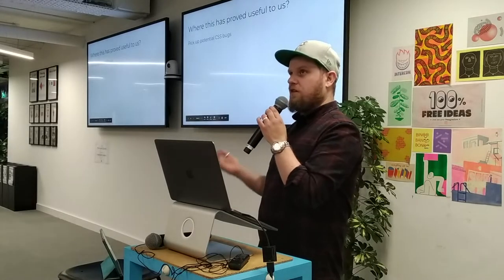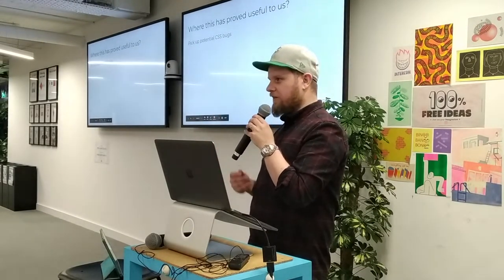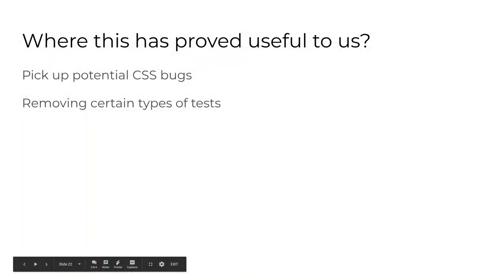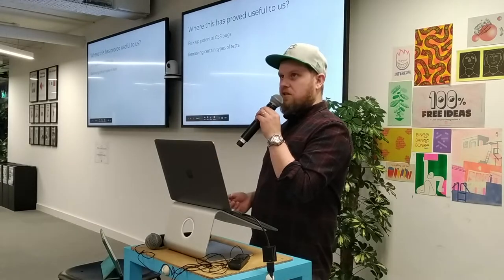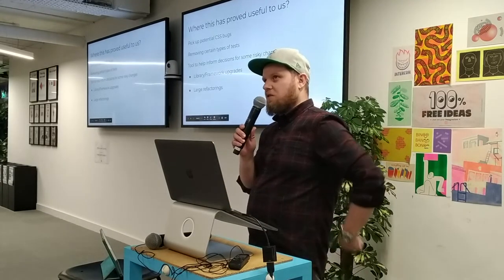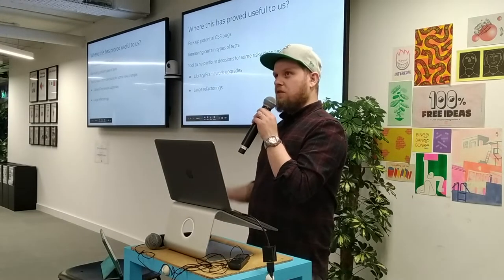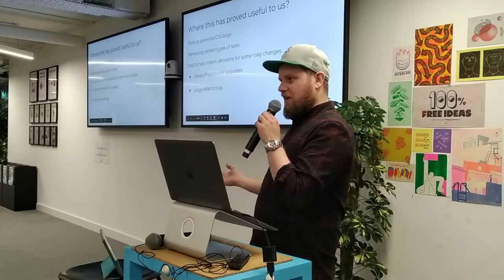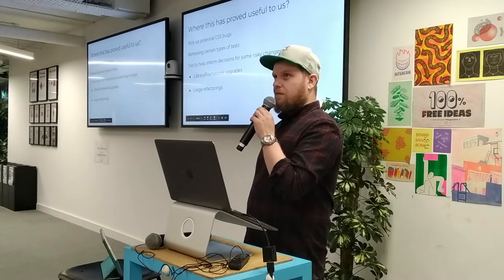Where does this prove useful to us? Straight off, potential CSS bugs — it's caught things like critical buttons in payment flows disappearing or becoming non-clickable. It's also removed certain types of tests: static tests checking whether a class is present or whether something looks a certain way can just be replaced with a snapshot. And surprisingly, we now use it as an extra data point when making risky changes. For library or framework upgrades — which can have a wide blast radius — we'll run it through Percy and know straight away whether something's broken. Our test suite can pass but something's actually broken live. It's worked great for large refactorings too.